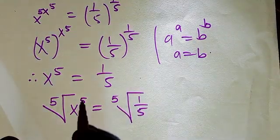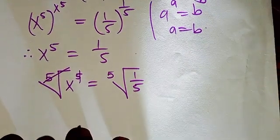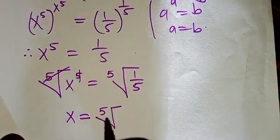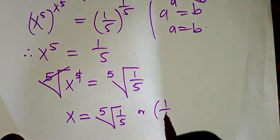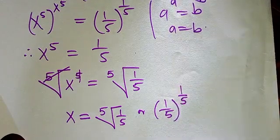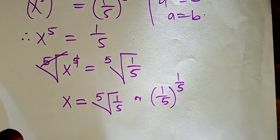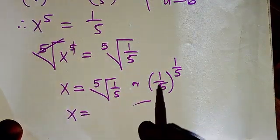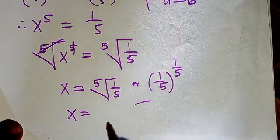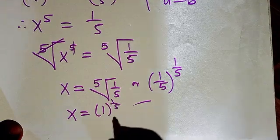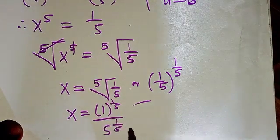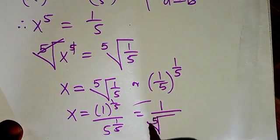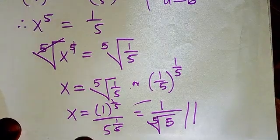Now from x to the power 5 equals 1 over 5, we take the fifth root of both sides of the equation. Raising x to the power 5 to the power 1 over 5 cancels to give x. On the right side, the fifth root of 1 over 5 is written as 1 over 5 raised to the power 1 over 5, which equals 1 raised to 1 over 5 divided by 5 raised to 1 over 5, giving us 1 over the fifth root of 5.